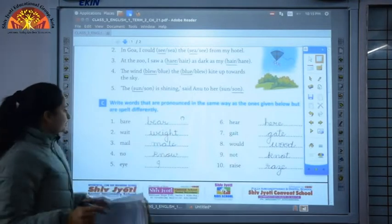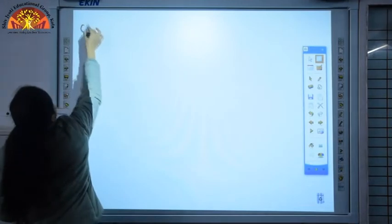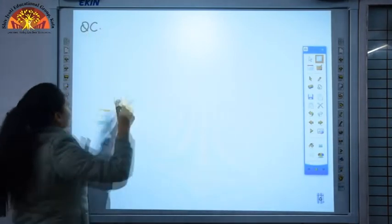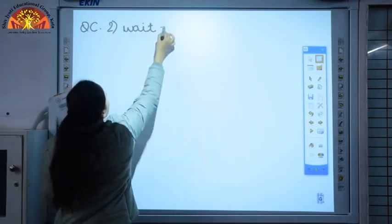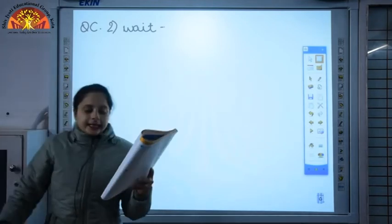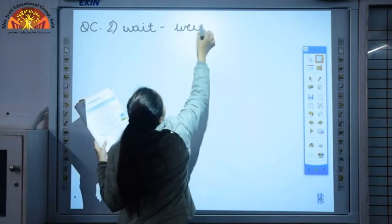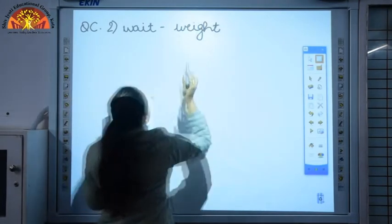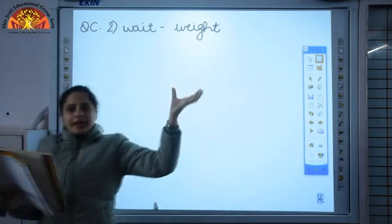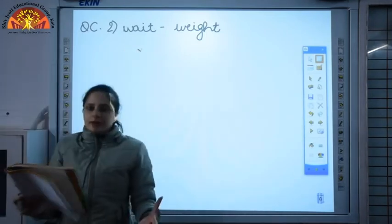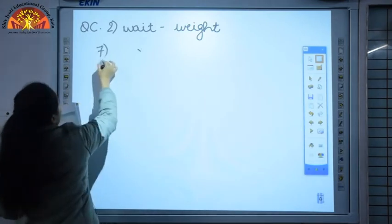I'll discuss this wait and weight. Question number C, second one. You have to give the correct word. Now this is weight, it will be similar to wait. So these two are again homophones. This weight refers to your health weight and this wait when you are waiting for someone.